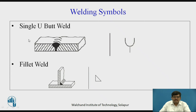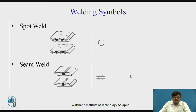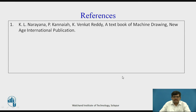Then we have fillet weld or T weld as we have seen previously. Then we have spot weld, where welding is done at exactly two spots on the two plates to be welded — the symbol is in a circular fashion. Then we have seam weld, where welding is done throughout the length — the symbol is shown accordingly. This covers the welding symbols.